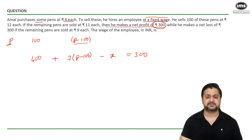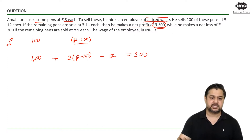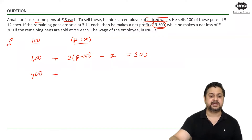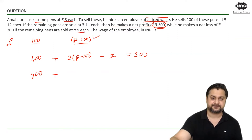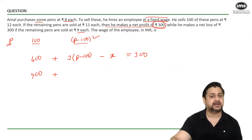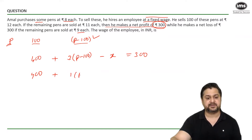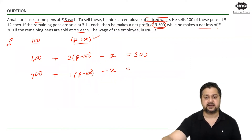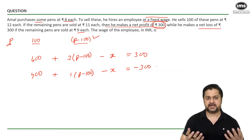The next condition says he makes a net loss of ₹300 if the remaining pens are sold at ₹9 each. The 100 pens still give ₹400 profit as before. Now for the p − 100 remaining pens sold at ₹9 each — my cost is ₹8, so I make ₹1 profit per pen. Total profit from remaining pens is 1 × (p − 100). Subtracting the employee wage x, the net result is a loss of ₹300, represented as −300.